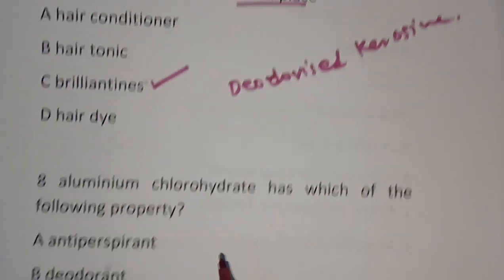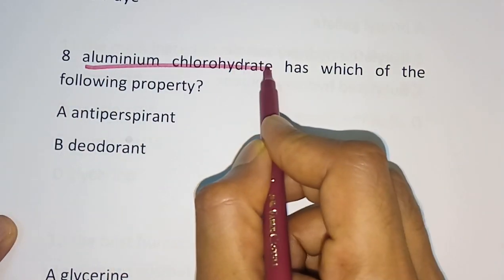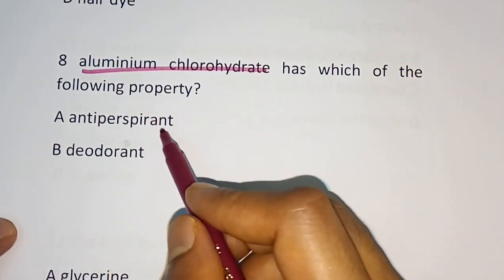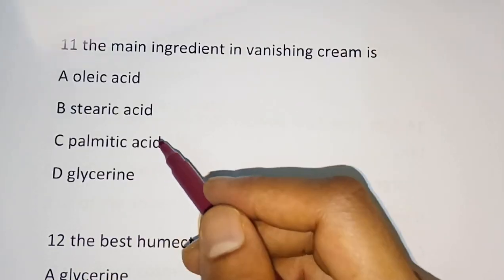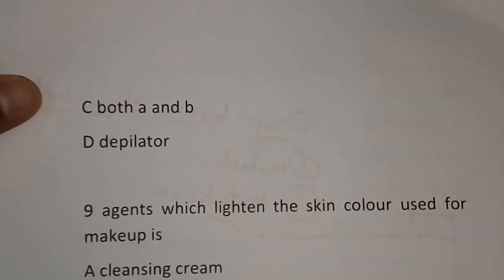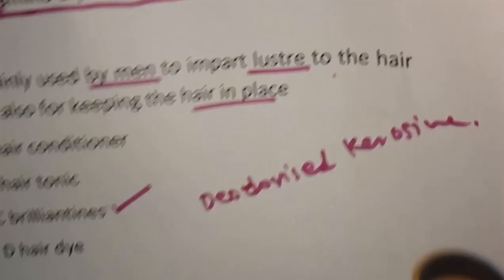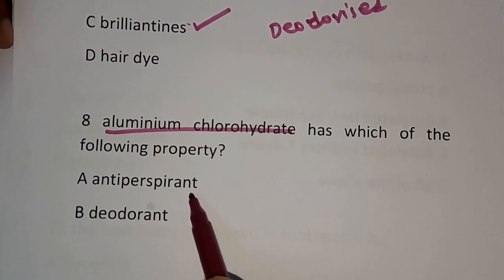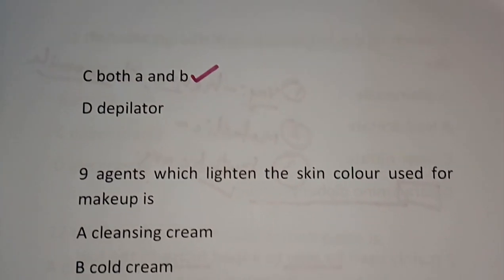Question number 8: Aluminium chlorohydrate has which of the following property — Antiperspirant, Deodorant, Both A and B, or Depilator? Aluminium chlorohydrate has both antiperspirant and deodorant activity. So C — Both A and B — is the correct answer.